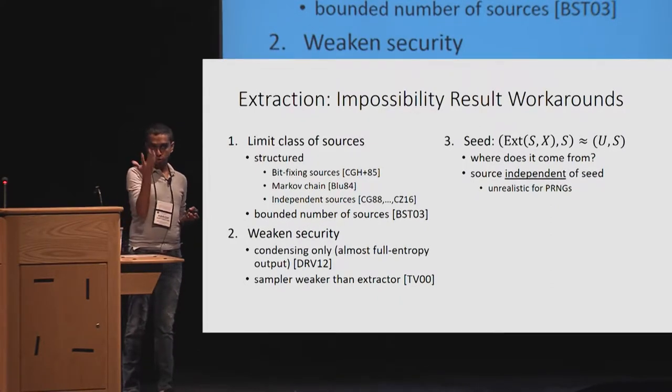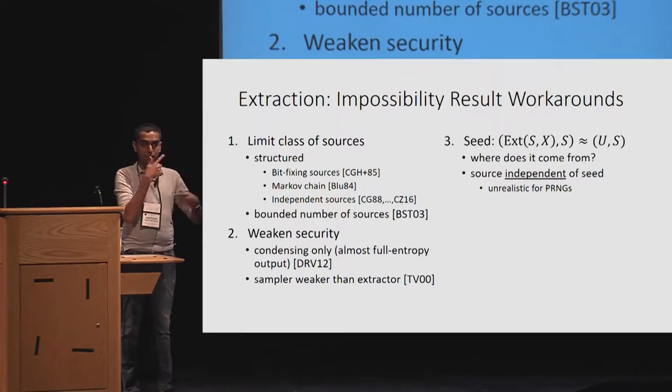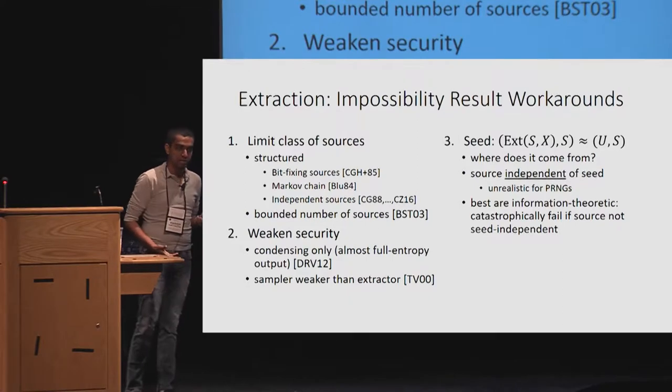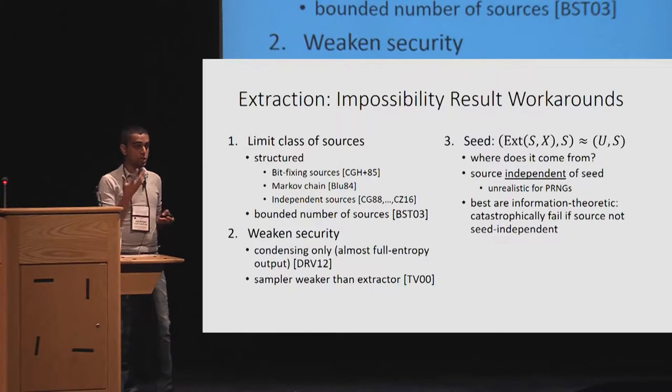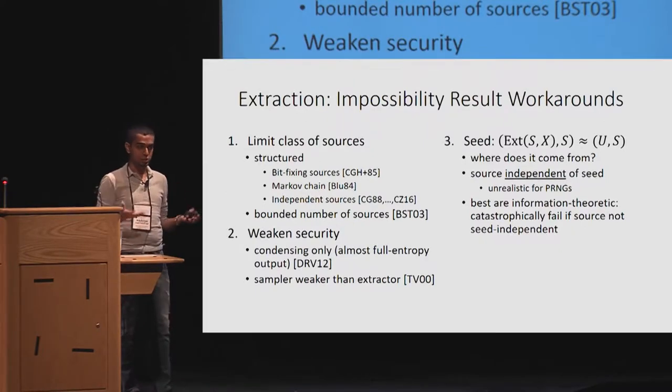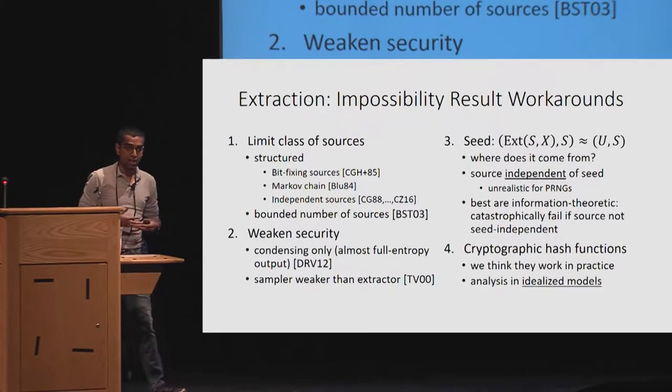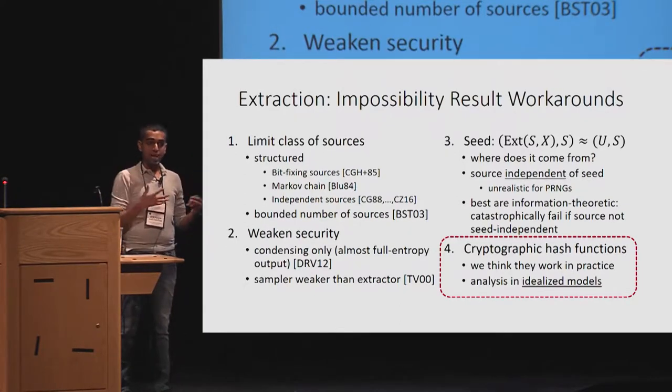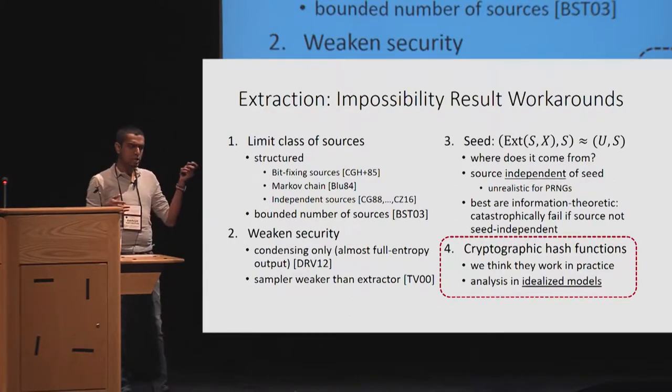It becomes a chicken and egg problem because sometimes you need to use randomness to generate the seed in order to generate randomness from the seed. But perhaps most importantly, the source needs to be independent of the seed, which is unrealistic for PRNGs. The reason is simple, because you're running a PRNG with seed, it's going to trigger a whole bunch of system interrupts, which would invariably end up becoming an entropy source. The best known extractors tend to be information theoretic extractors, which catastrophically fail if source is not seed independent. So clearly, this is not very attractive for practitioners.